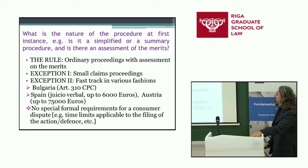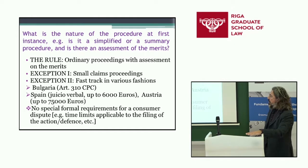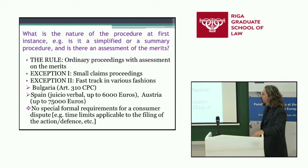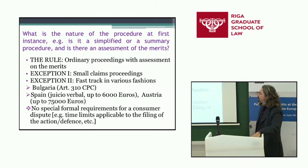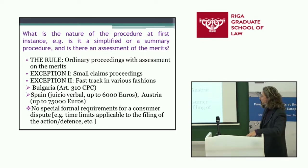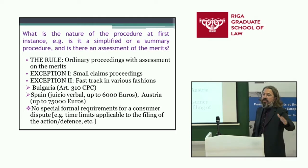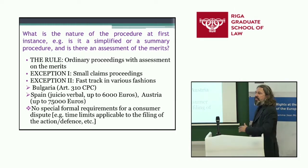What is the nature of the procedure at first instance — is it a simplified or summary procedure? Is there an assessment of the merits? The rule is that ordinary proceedings with assessment on the merits prevails. Exceptions include small claims procedures, boosted now by the European Small Claims Regulation, and some other patterns of litigation such as a fast track in Bulgaria or Spain up to 6,000 euros, and also in Austria. There are also no special formal requirements for consumer disputes or procedural admissibility rules; whatever is provided for the average litigant is also provided for the consumer.